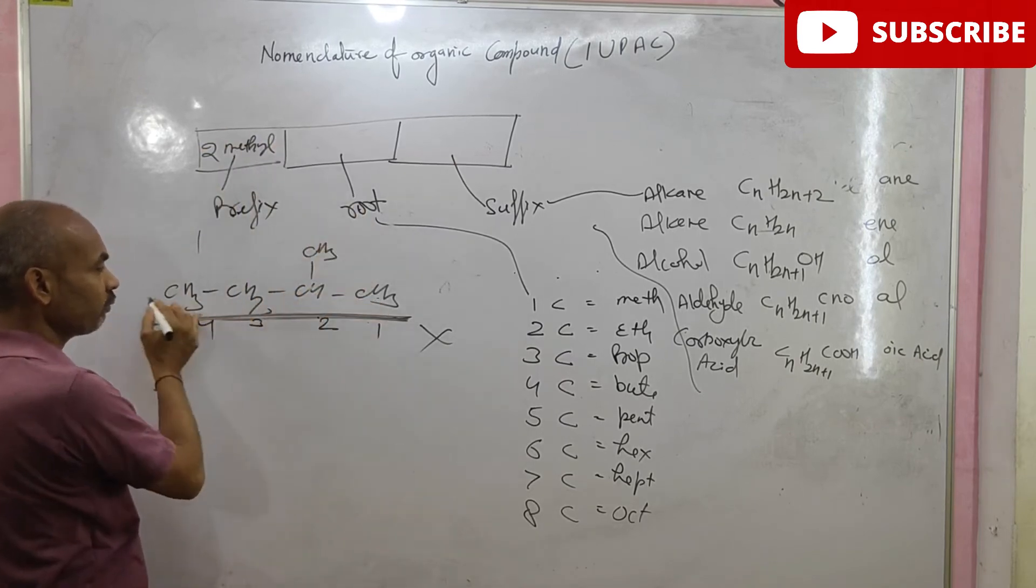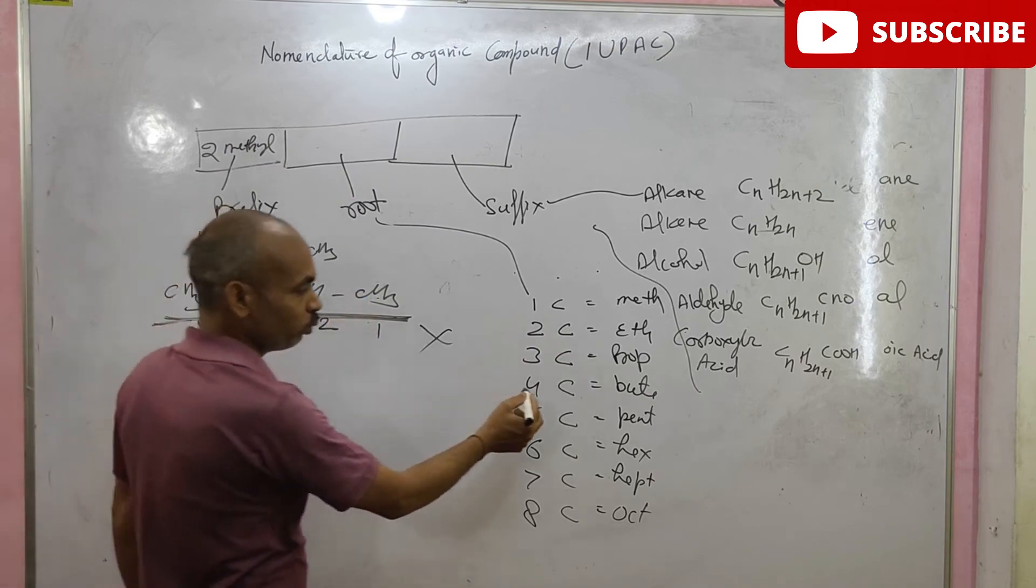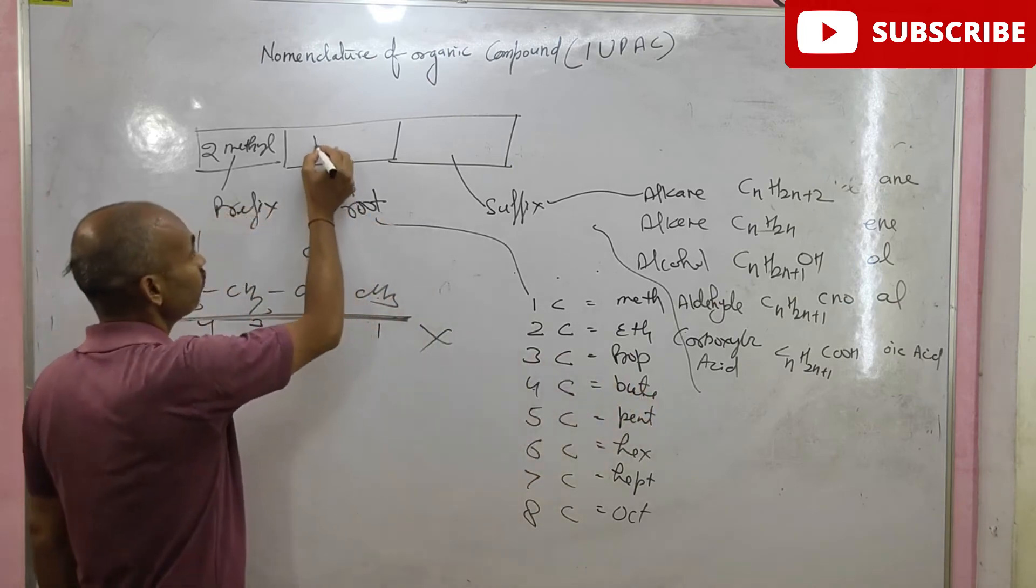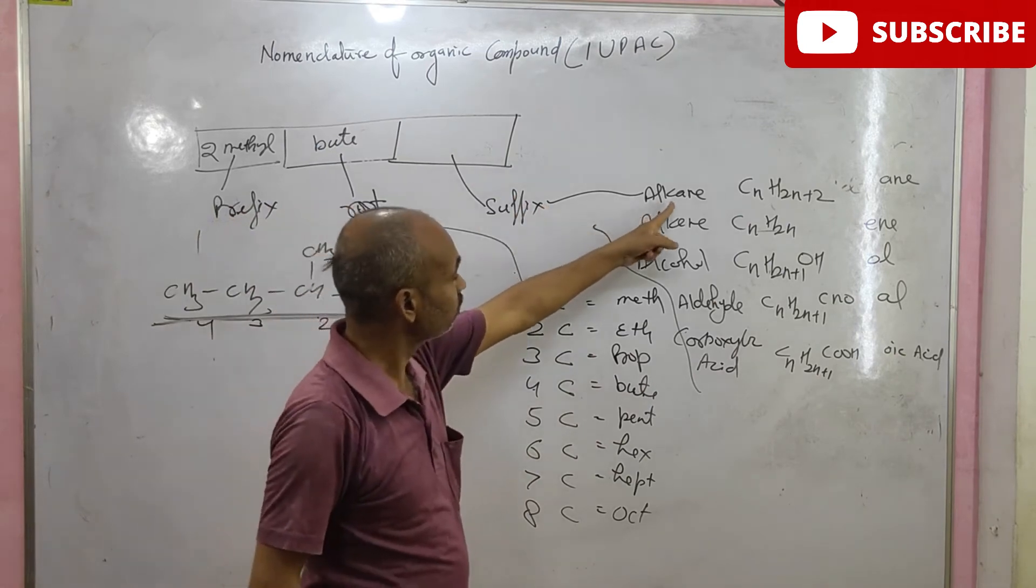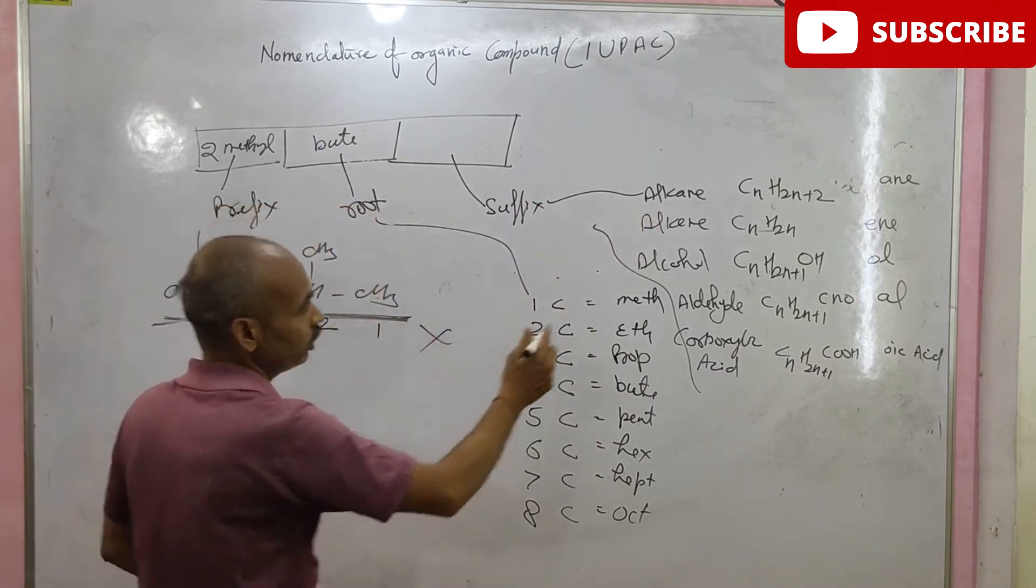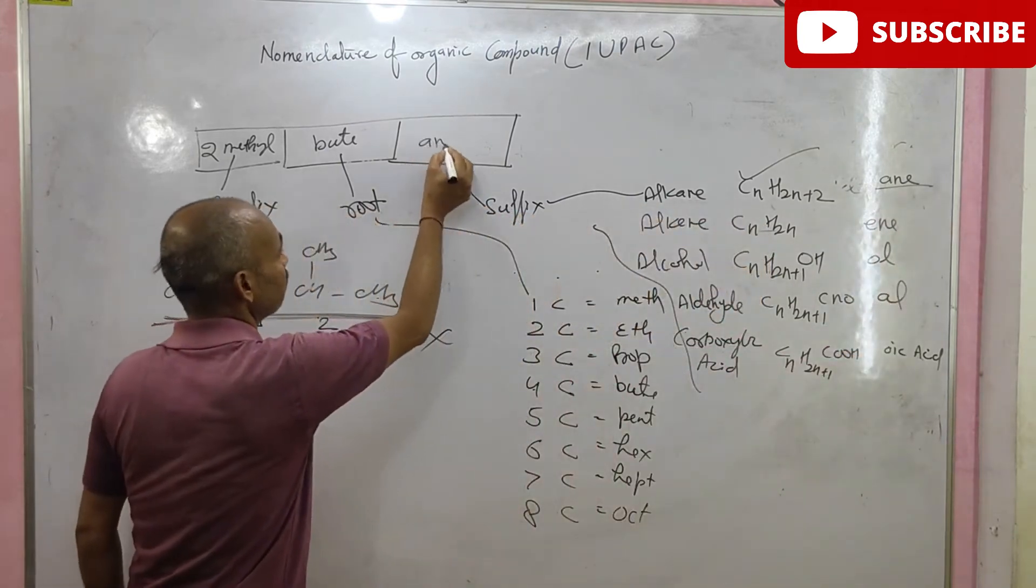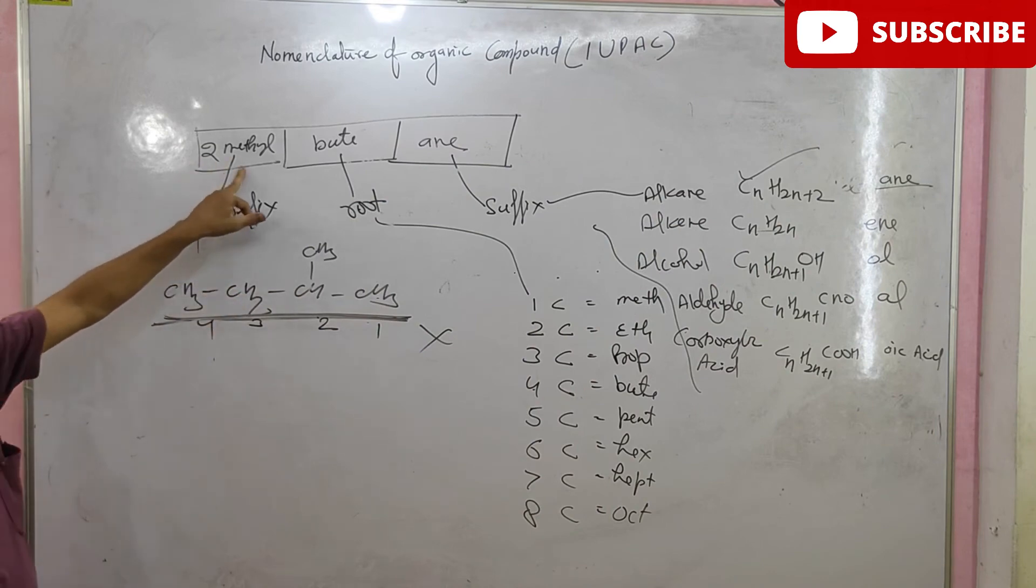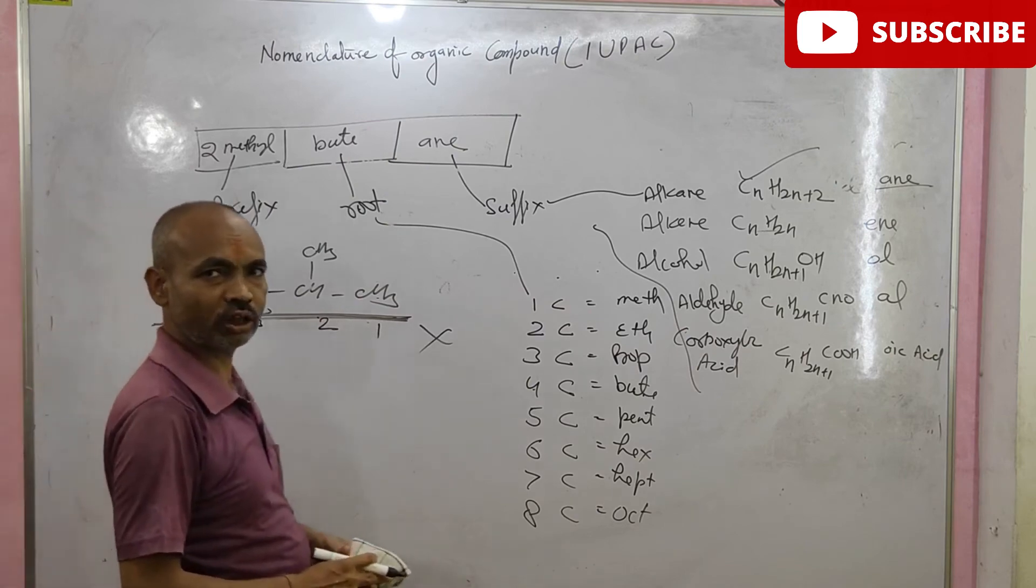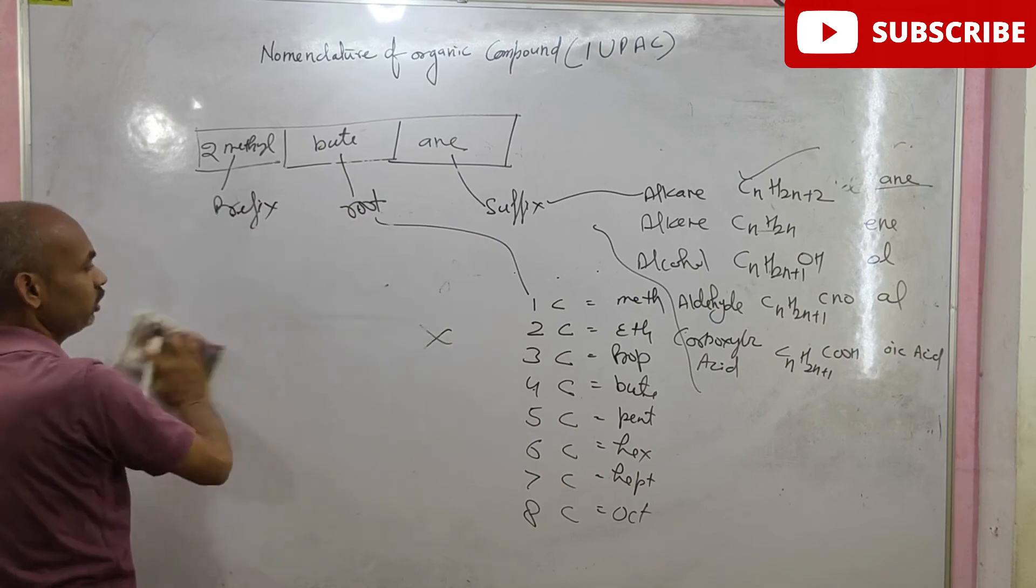Root. How many carbon are present in the straight chain? 4 carbon. 4 carbon means but. And what is the suffix? This suffix is fit in this formula. So, its suffix is ane. Hence, it is IUPAC name 2-methyl-butane. Let us start another example to clear the topic more easily.